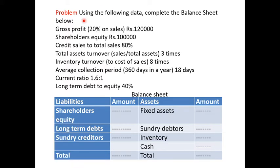Here, using the following data, we need to complete the balance sheet. Some information is given, and with the help of that, we have to complete the balance sheet. The first piece of information is gross profit: 20% on sales, rupees 1,20,000 is given. With the help of this, we can calculate the sales.